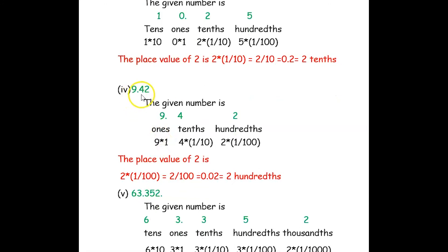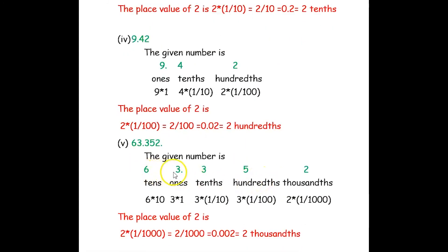The next number is 9.42. The digit 2 is in the decimal part — this is the tenths place, then hundredths. So 2 is in the hundredths place, and the place value is 2 × (1/100), that is 2 hundredths. The next number is 63.352. Here 2 is in the decimal part: tenths, hundredths, thousandths. So 2 is in the thousandths place — the place value is 2 thousandths.